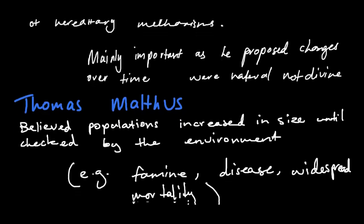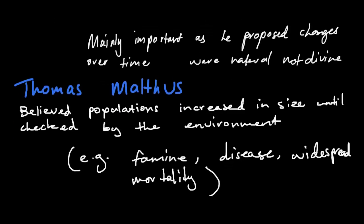Thomas Malthus believed that populations increased in size until checked by the environment. When I say 'checked by the environment,' I mean things like famine, disease, and widespread mortality — anything that affected population sizes. He believed populations just kept increasing until something in the environment brought them back down, and that's fairly significant.